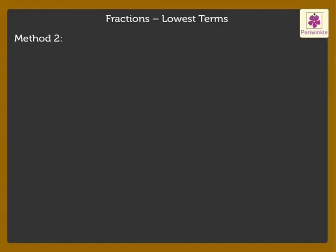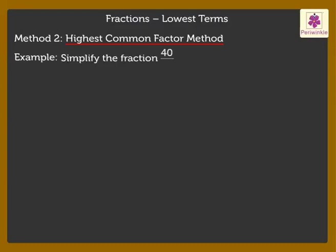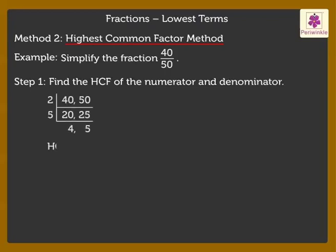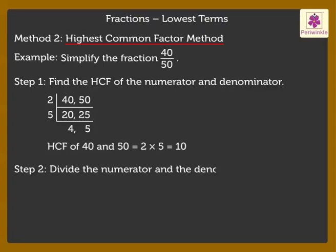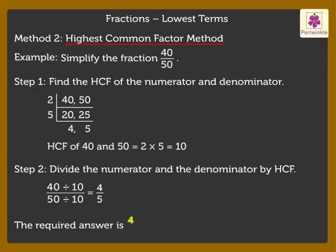Method 2: Highest Common Factor method. The HCF of the numerator and the denominator is 2 into 5, which is equal to 10. Step 2: Divide 40 and 50 both by the HCF, 10. It gives 4 upon 5. Therefore, the required answer is 4 upon 5.